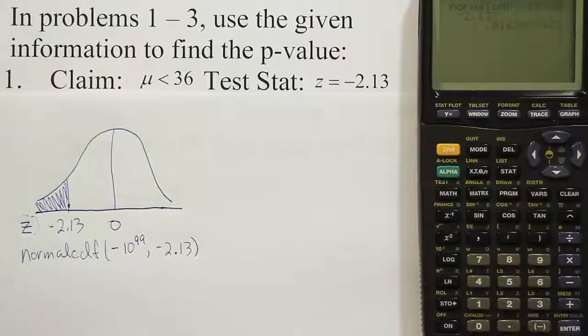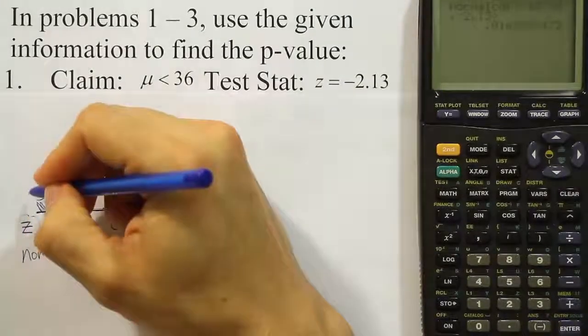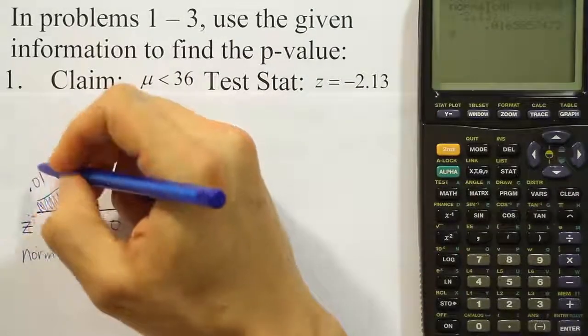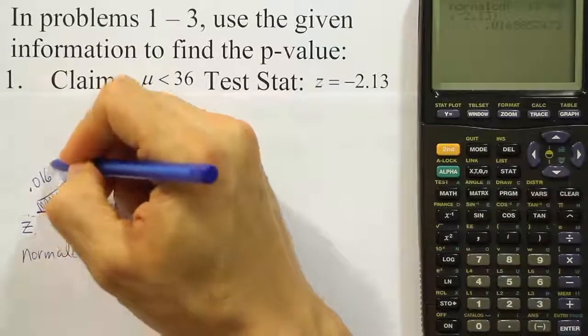and we get the answer 0.0165. So the area in this tail is 0.0166 if you round off.